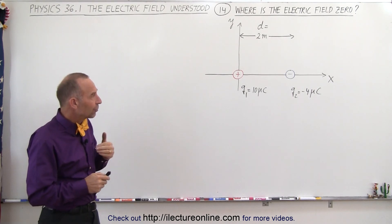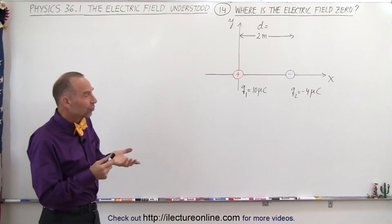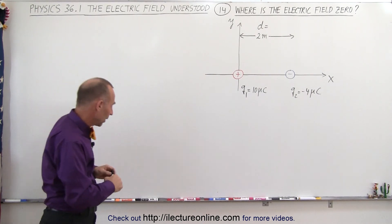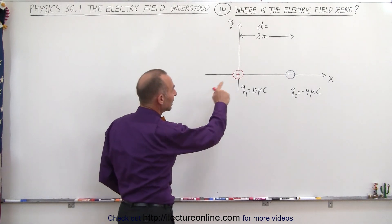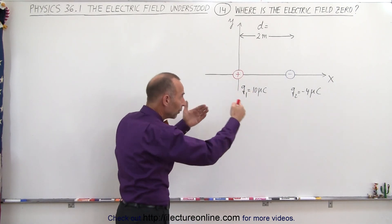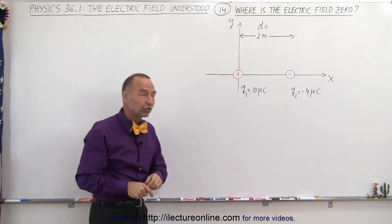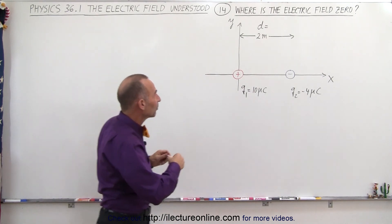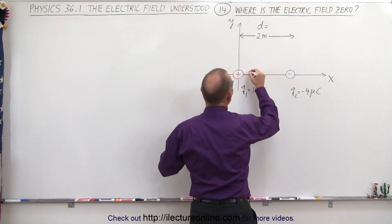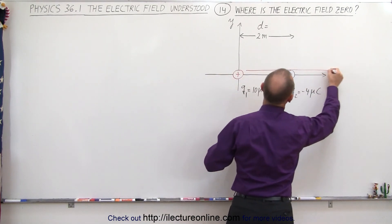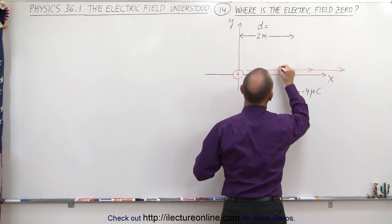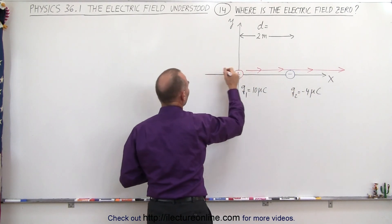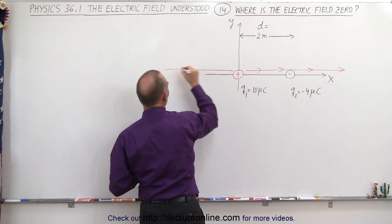To figure out how to do that, we start by drawing the vectors relative to the electric fields emanating from or pointing towards these charges. For a positive charge, the electric field points away from the charge, so on the right side we have an electric field pointed to the right, and on the left side the electric field points to the left.